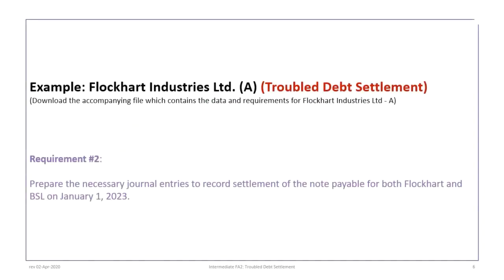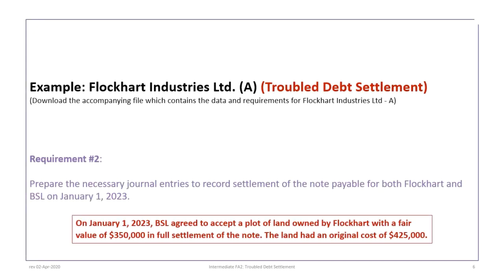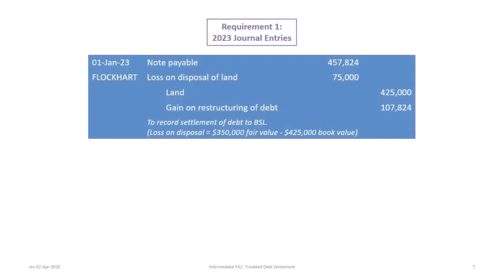We can now proceed to requirement 2, which follows the settlement on January 1st, 2023, where we prepare journal entries to record the settlement of the note payable for both Flockhart and BSL. Here's how we record it for Flockhart: we debit the note payable for the current value of $457,824 — the value at December 31st, 2022 or January 1st, 2023 from the amortization table. We credit land for $425,000 because the note is being settled in exchange for land at its original cost.